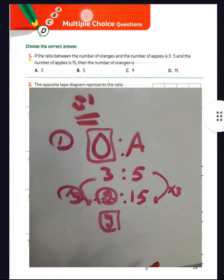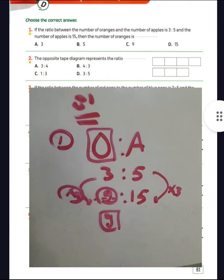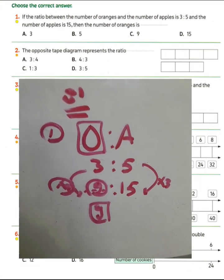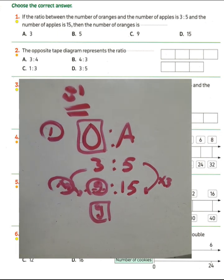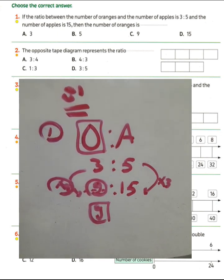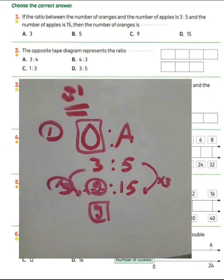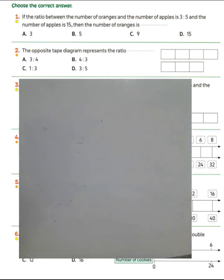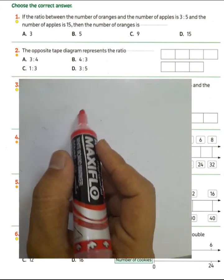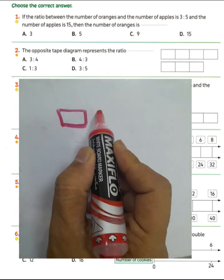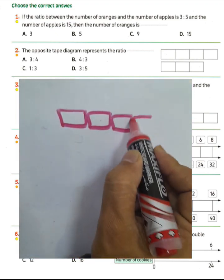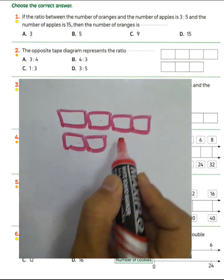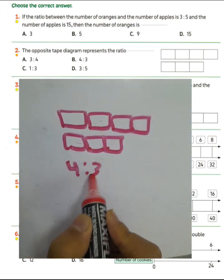Question number two: the double number line represents the ratio between two quantities. We count how many boxes: the first line has four boxes — one, two, three, four — and the second has three. The ratio is four to three.